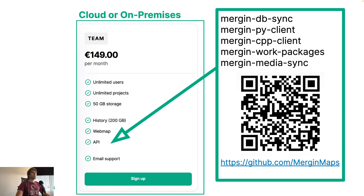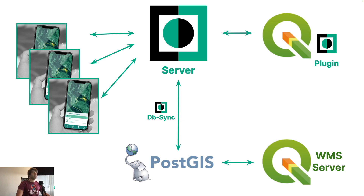All these tools can be found on GitHub in the Merging Maps repository, and they are open-sourced. You can use them on all on-premises installations, with a team subscription, or during the trial period. A typical setup with DB Sync involves a cloud team subscription, field workers on mobile devices, power users in the office using QGIS, and a PostGIS database connected to QGIS Server or GeoServer. We'll see how you can use DB Sync to connect your workspace on the cloud to PostGIS.